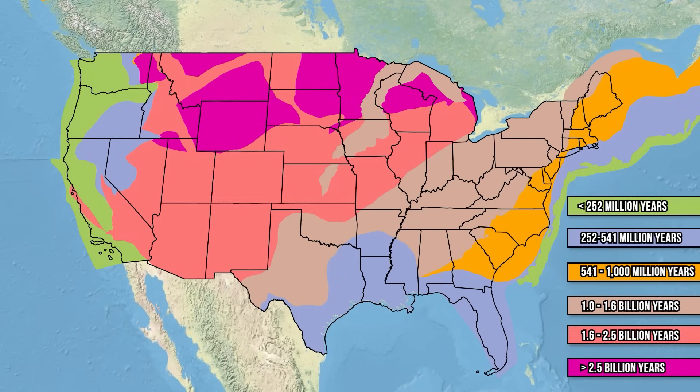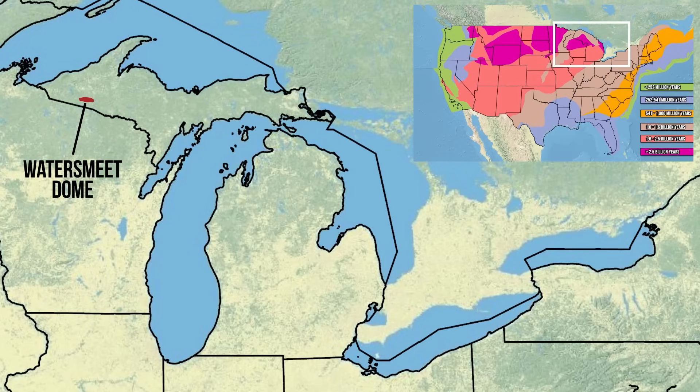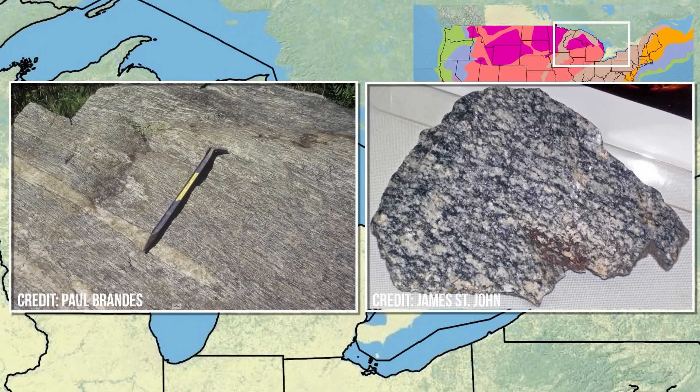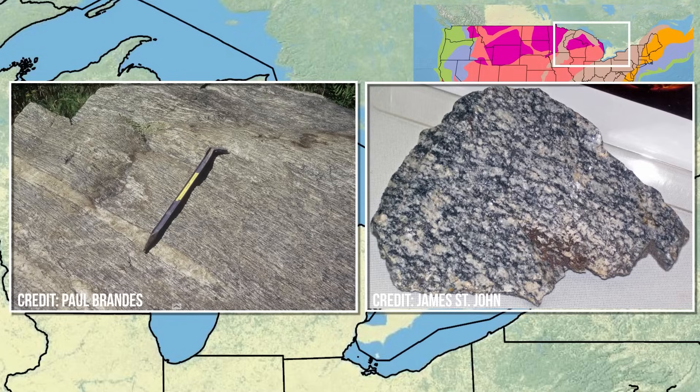These rocks are exposed in an area called the Watersmeet Dome. Here are what the oldest rocks in the Watersmeet Dome look like. Some are strongly deformed, as on the left, and some are less so, as on the right.